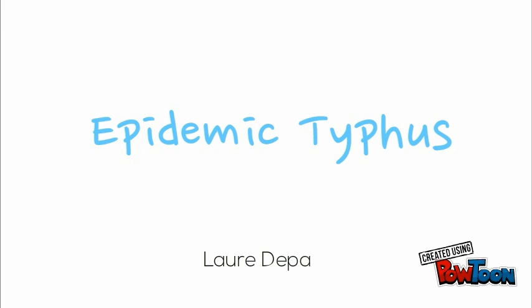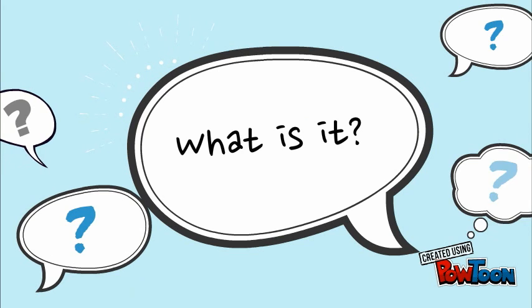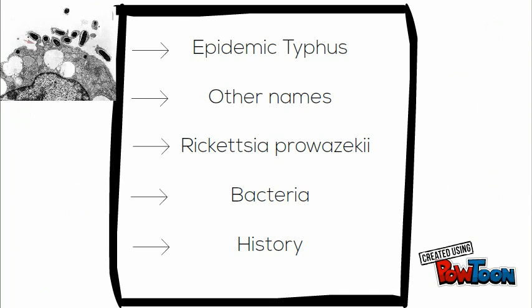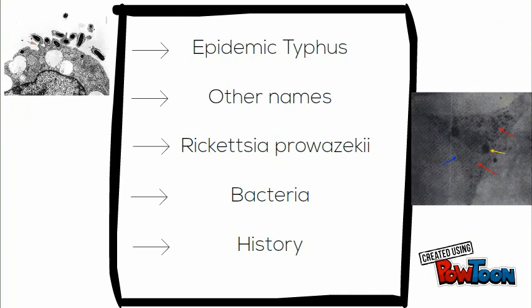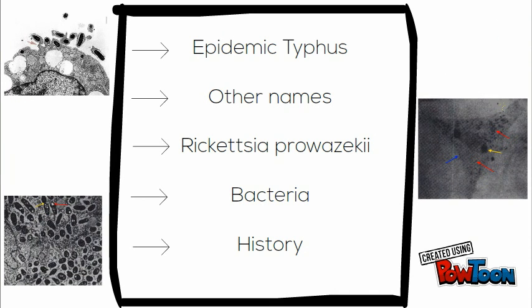Epidemic Typhus by Laura Depati. What is it? The name of the disease is Epidemic Typhus, also known as Jail Fever or Camp Fever. The name of the microbe that causes it is Rickettsia prowazekii. It is a bacteria.